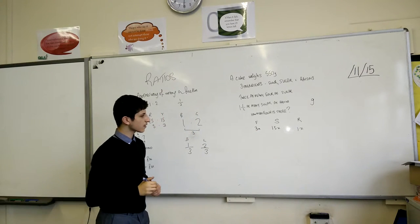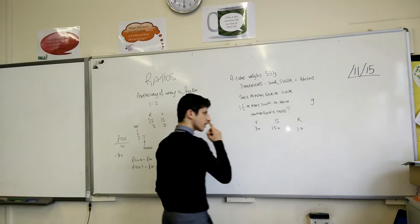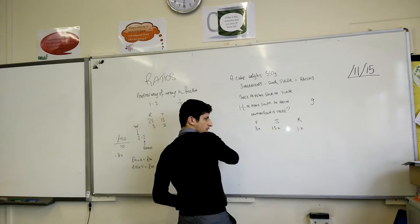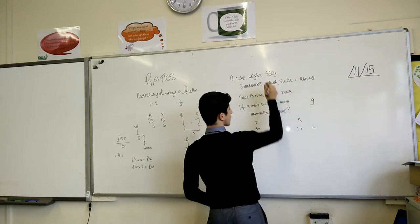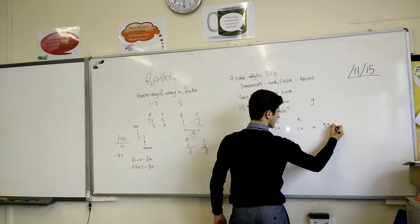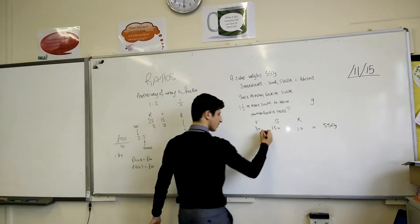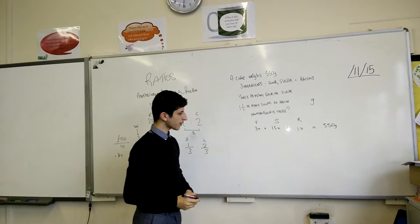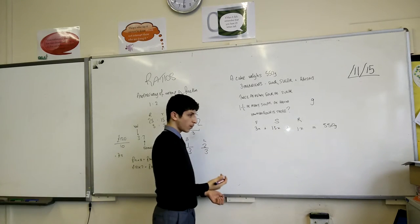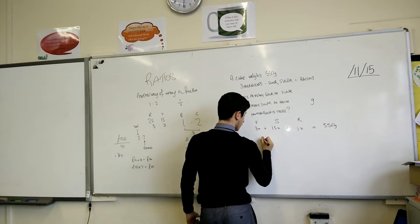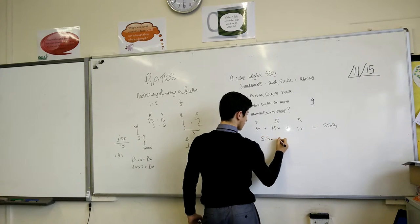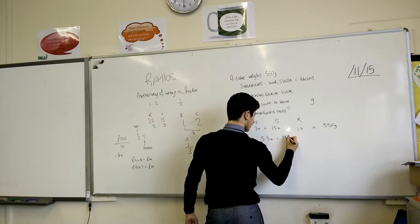To find how much one part is, you can add all this together. You know that the whole total is going to be 550 grams, because that's how much the ingredients are. You add all these together. 3 plus 1.5 plus 1, 4.5 plus 1 is 5.5x equals 550 grams.